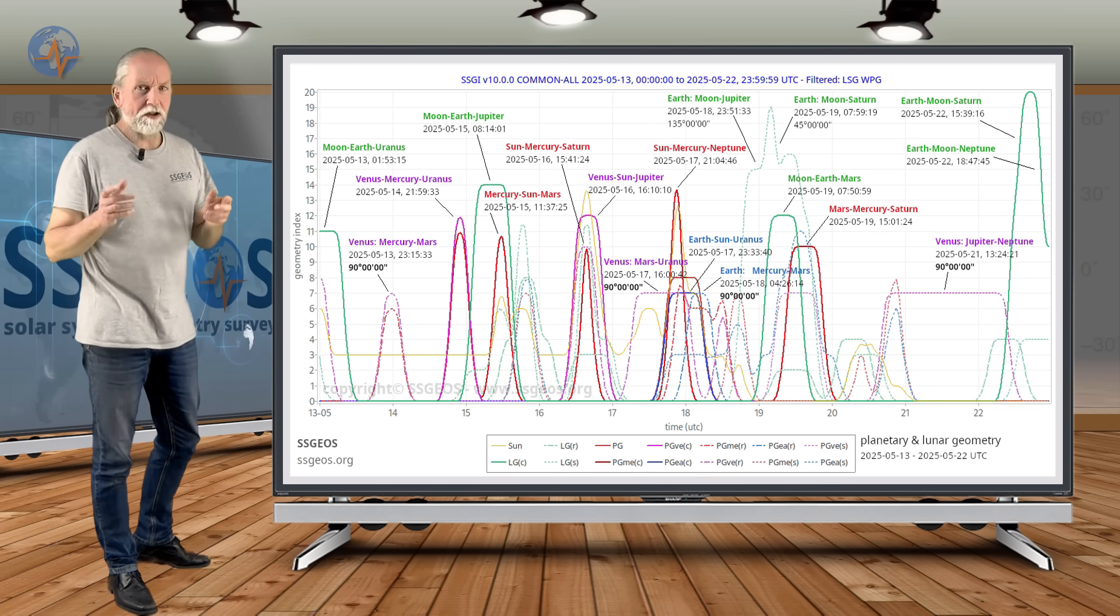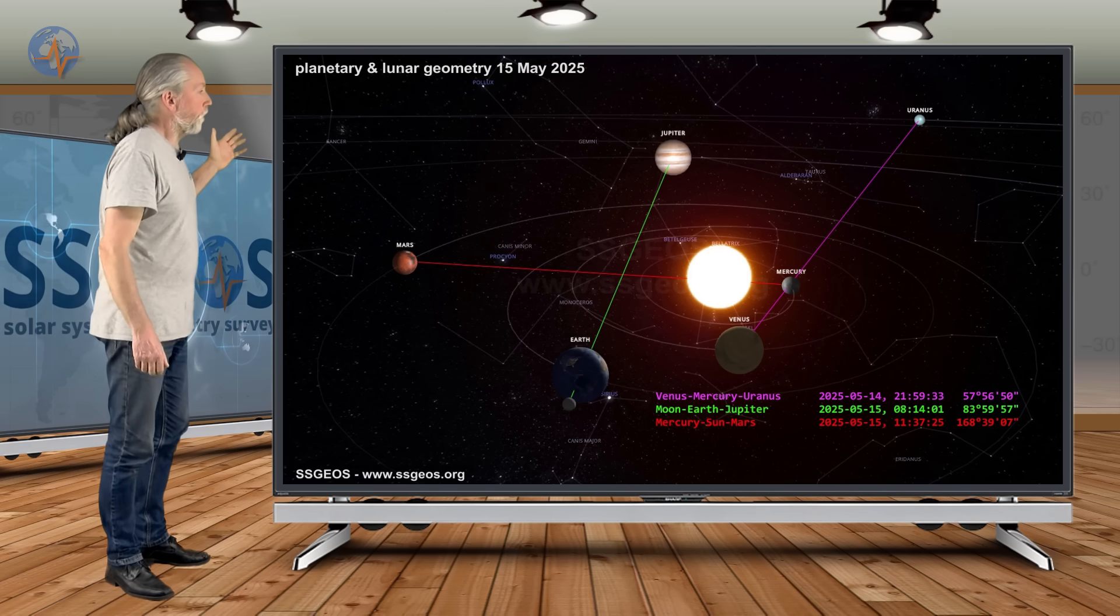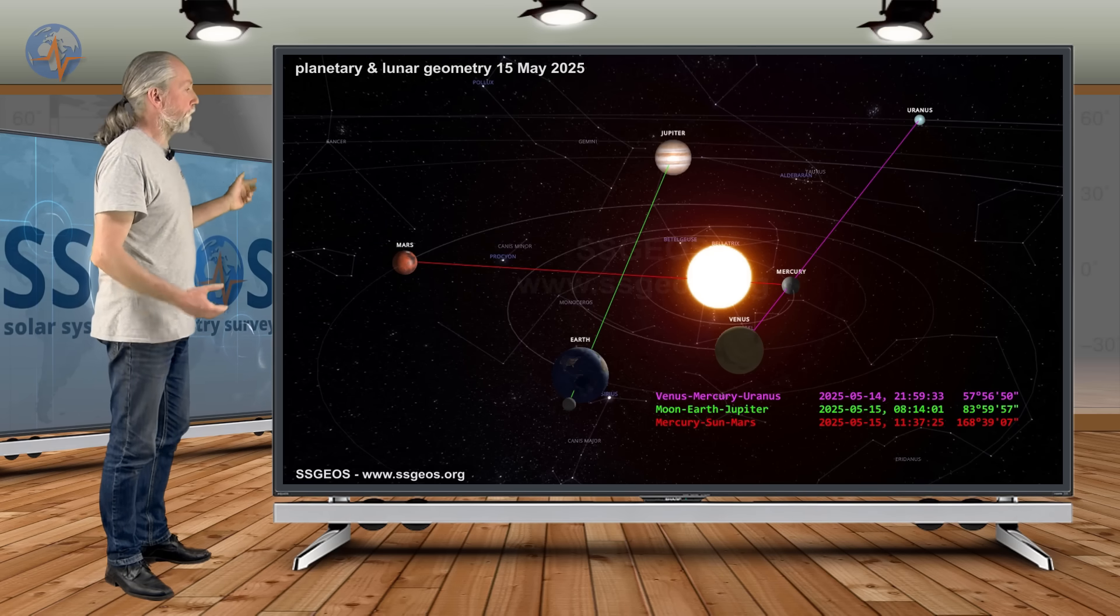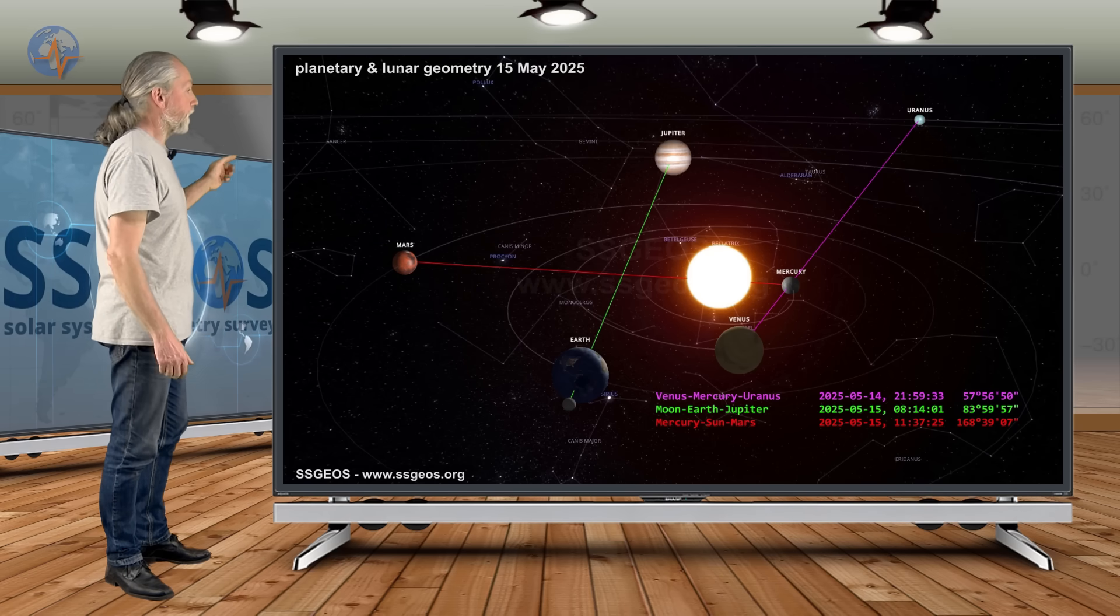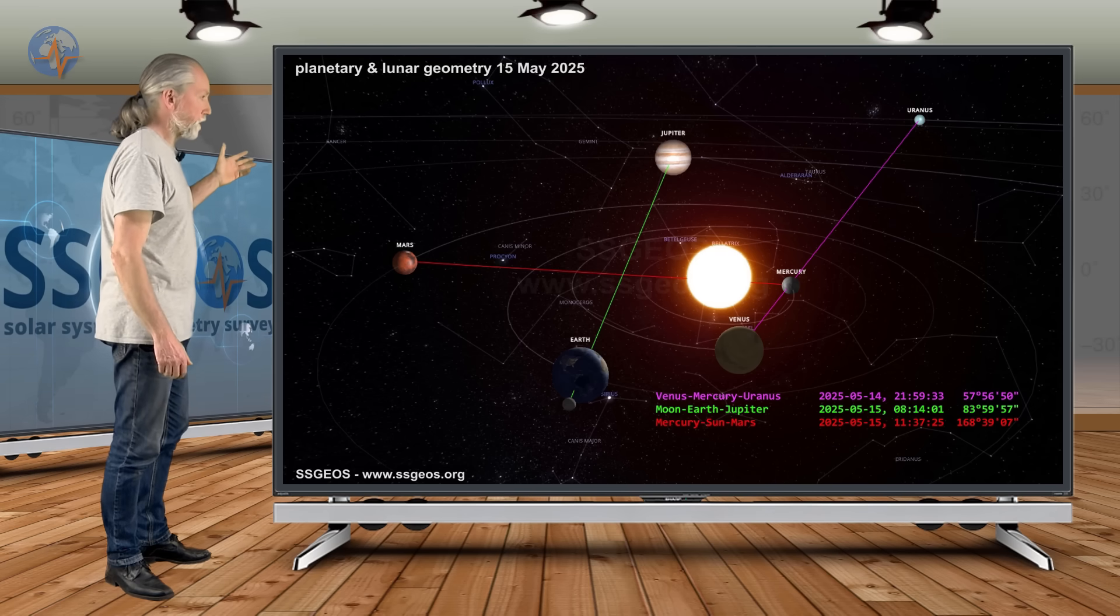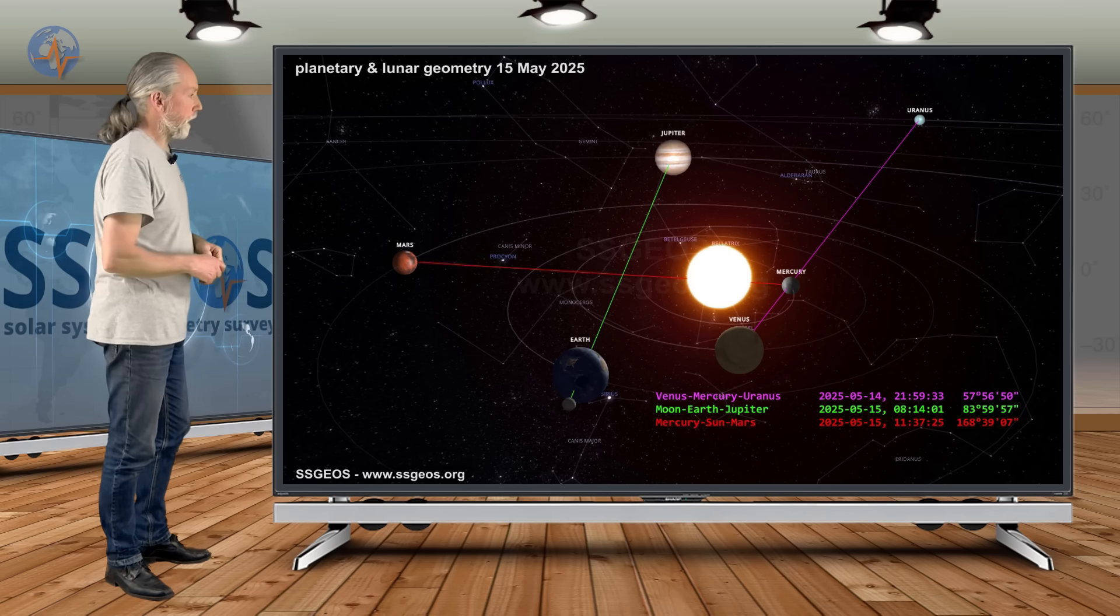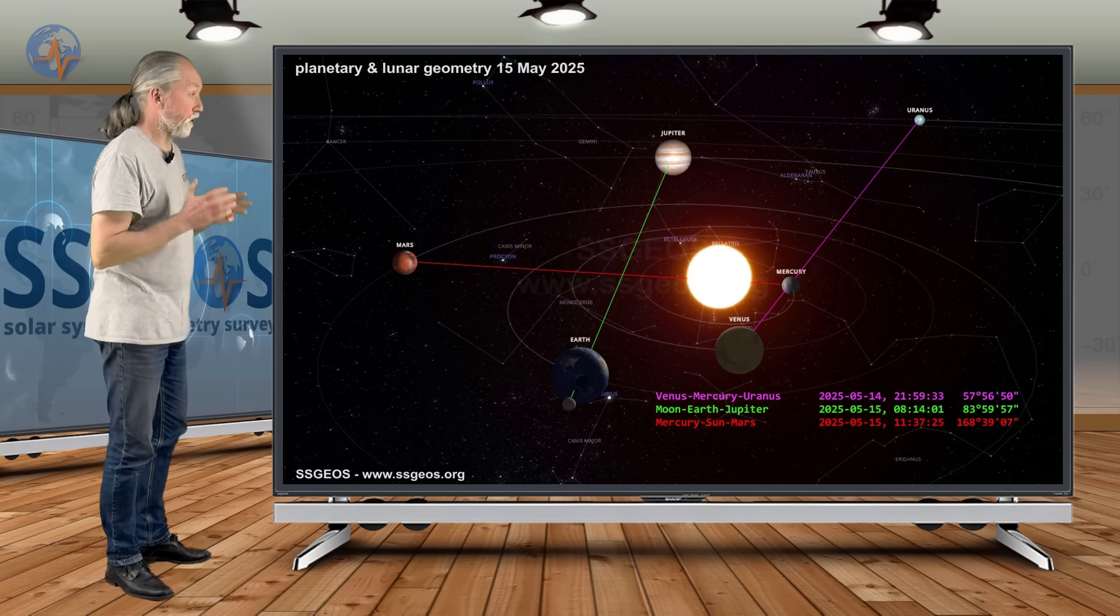But keep in mind the sequence of planetary geometry. In the solar system, we see this. On the 15th, we have this convergence of Mercury, Sun and Mars in a conjunction, Venus, Mercury, Uranus, and also a lunar conjunction with Jupiter. That is a really tight convergence there. It's critical.